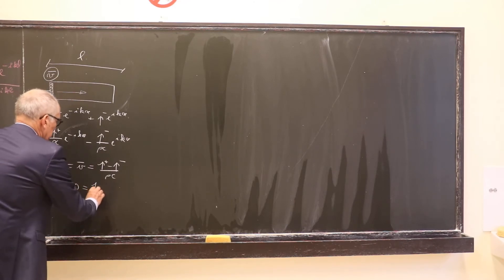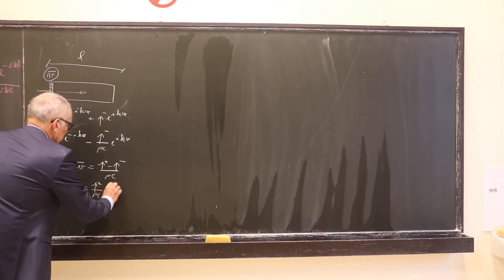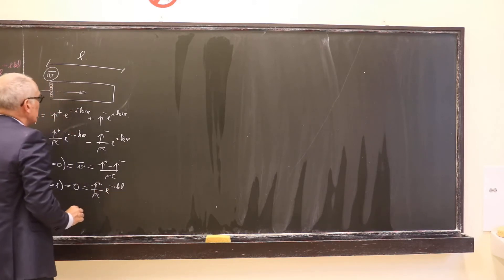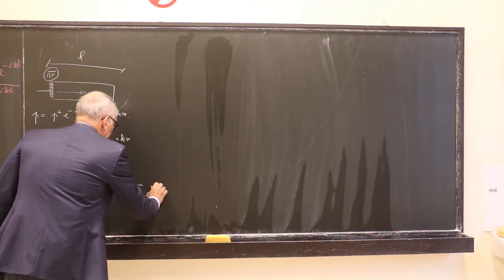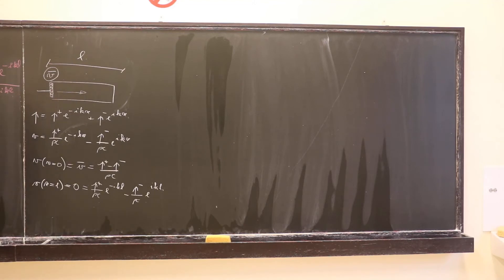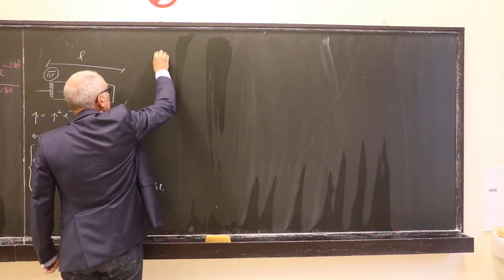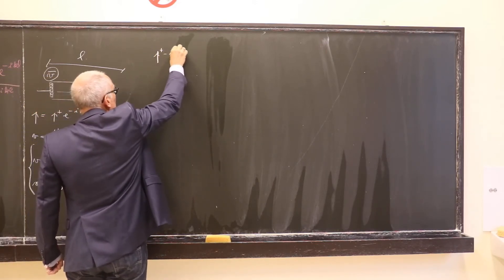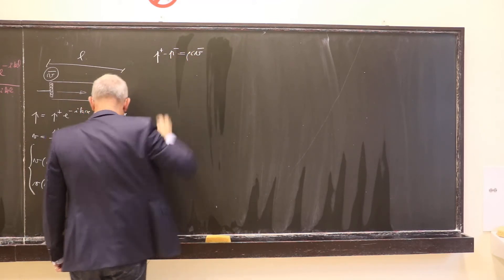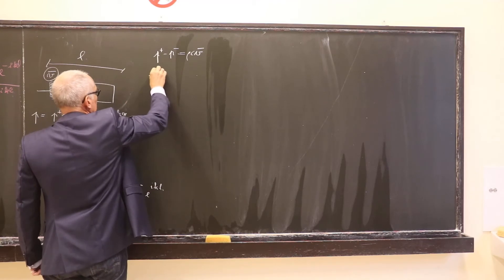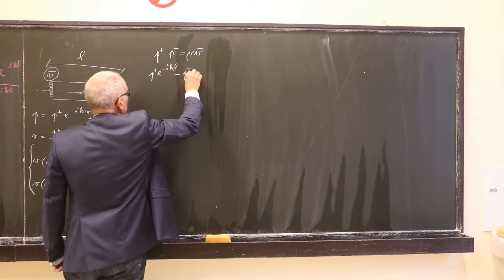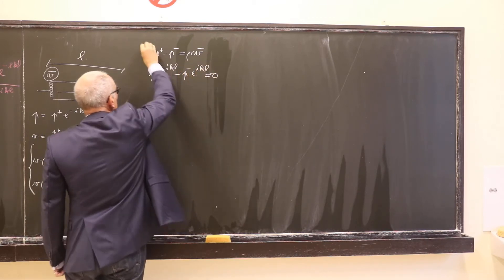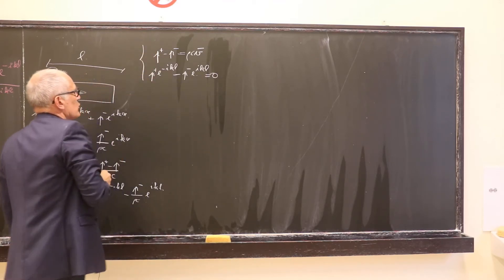This gives us p+ over ρc times exponential minus ikl, where l is the length of the duct, minus p- over ρc times exponential ikl equals zero. This constitutes a system of equations for p+ and p- that we can simplify: p+ minus p- equals ρcv̄, and p+ exponential minus ikl minus p- exponential ikl equals zero. We can solve this by substitution.